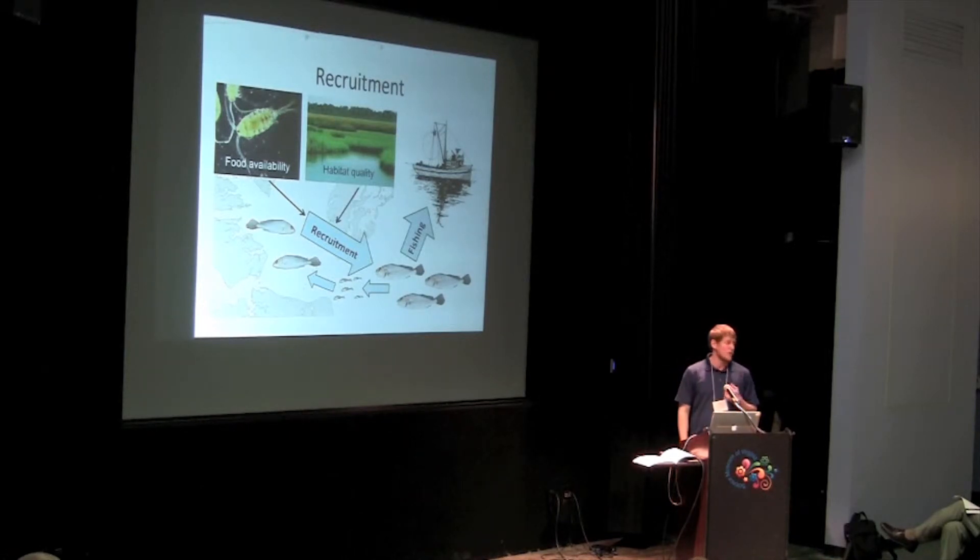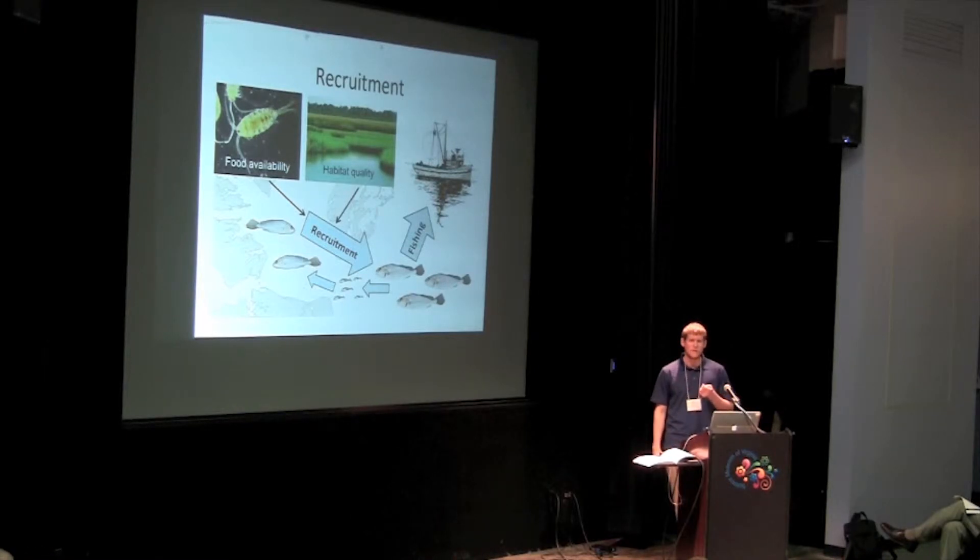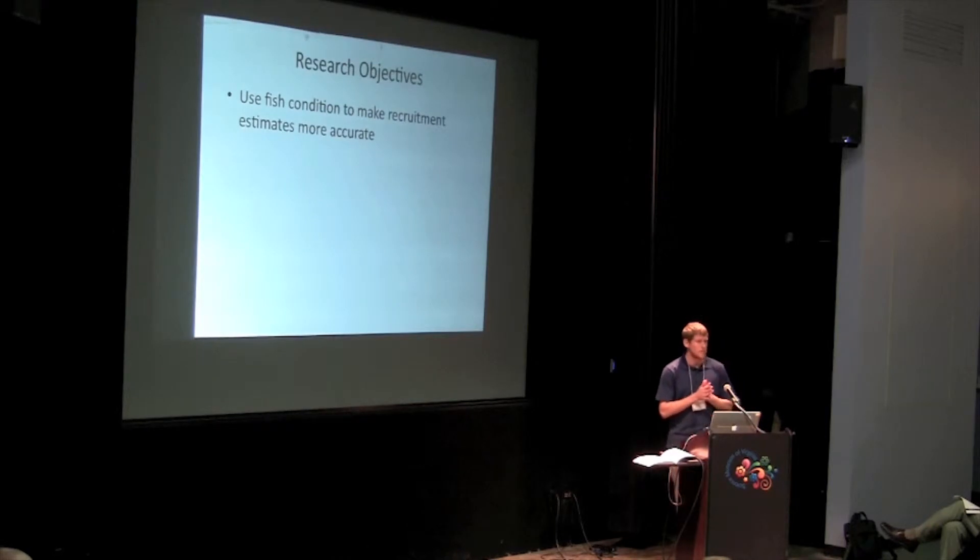At times when food availability is low or there may be poor habitat quality, it's probably only the healthiest juveniles that actually end up surviving. So maybe it's best to base our estimates of recruitment on those healthy juveniles. And that's one of the objectives of my research, to see if we can use fish condition to make our recruitment estimates more accurate. But in order to do so, we have to answer two questions.